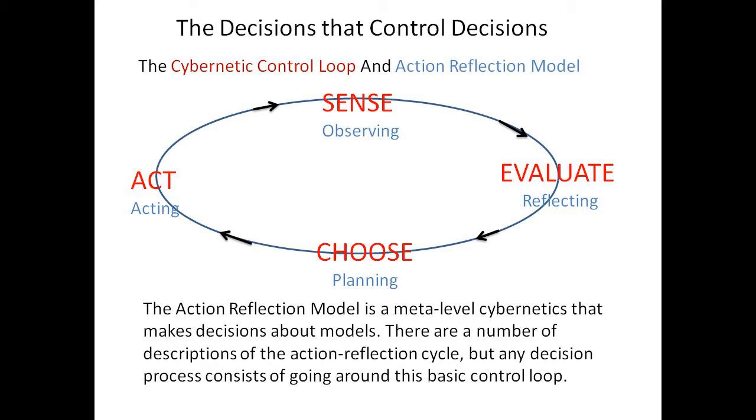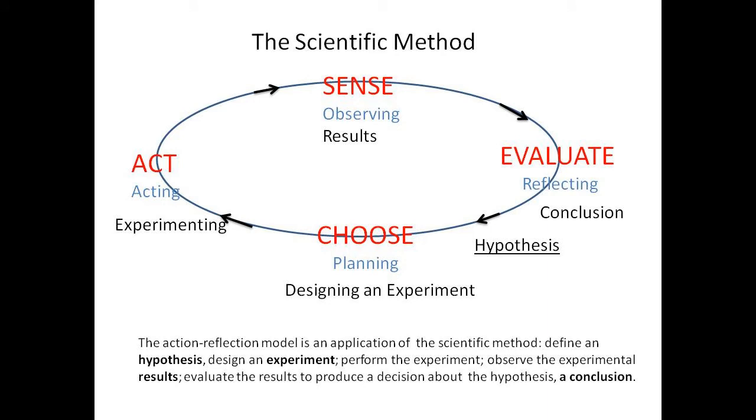But any decision process consists of going around this basic control loop. The scientific method: the action-reflection model is an application of the scientific method. Define a hypothesis, design an experiment, perform the experiment, interpret the experimental results, evaluate the results to produce a decision about the hypothesis—a conclusion.